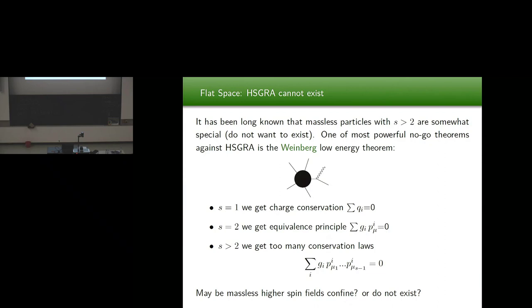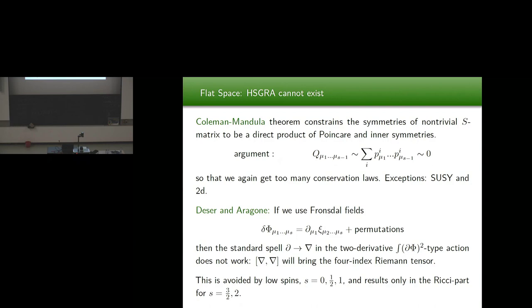Unfortunately, if spin is greater than 2 you have more powers of momentum, and you get a tensorial conservation law that prevents any non-trivial scattering. Another argument in the same spirit constraining S-matrices is the Coleman-Mandula theorem. It constrains possible symmetries of S-matrices by saying that it's impossible to have higher spin charges: if you had a higher spin charge, it would carry indices transforming non-trivially under the Lorentz group, and in practice these indices would be carried by momentum, again imposing a tensorial conservation law constraining dynamics too much for non-trivial scattering. Well-known exceptions include supersymmetry and two-dimensional theories.